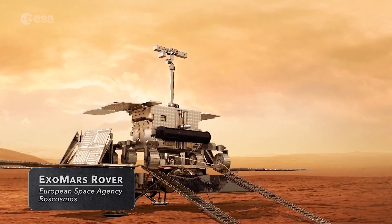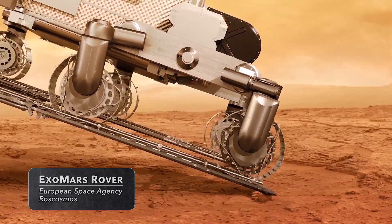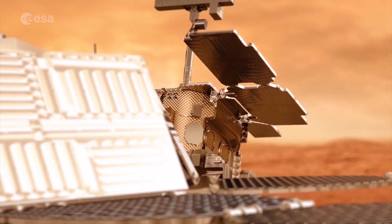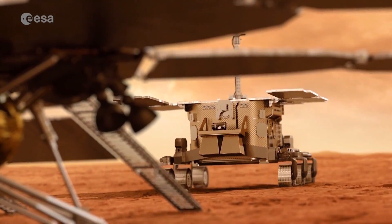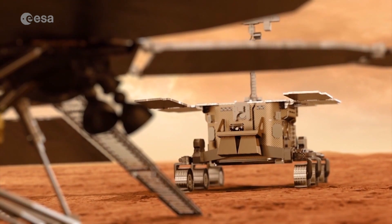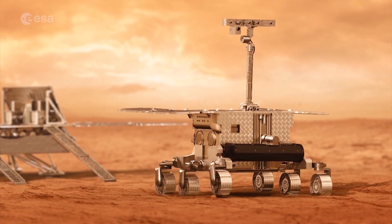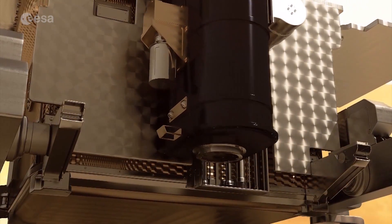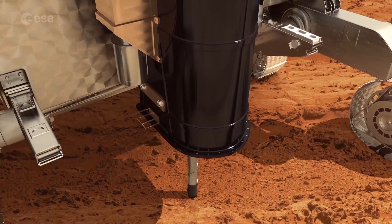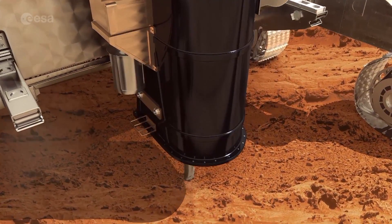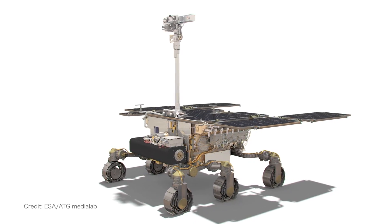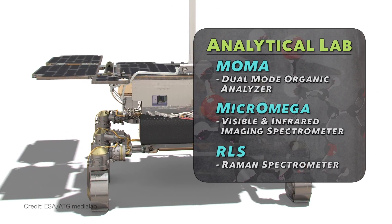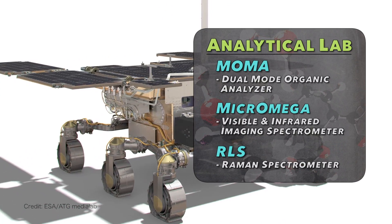As it descends from its landing platform, ExoMars will embark on an enterprising mission to uncover buried signs of past or present life. The Martian surface is a harsh environment bombarded with cosmic radiation, but the subsurface could offer better protection. For this reason, ExoMars is equipped with an extending drill that can retrieve samples from up to 2 meters below the surface. Studying these samples will be the job of the Analytical Lab, a trio of instruments designed to search for the molecular fingerprints of life.